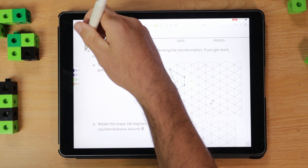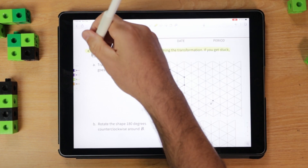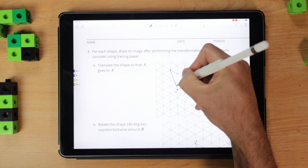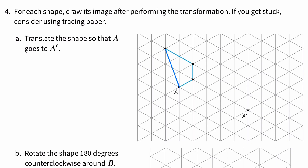Alright, on to number four. For each shape, draw its image after performing the transformation. If you get stuck, consider using tracing paper. Translate shape A so that A goes to A prime. I'm just going to trace this out — you can move it to A prime so the corresponding point goes to the same spot. I'll take every vertex on that figure and move it that same amount.